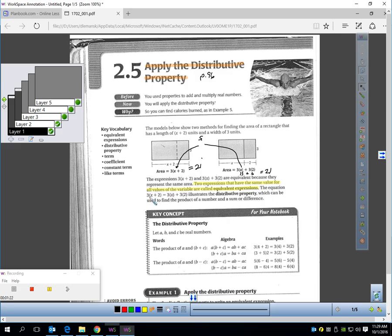The equation 3 times (x + 2) equals 3 times x plus 3 times 2 illustrates the distributive property. The distributive property can be used to find the product of a number and a sum or difference.